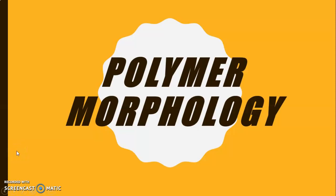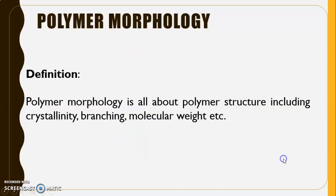We will proceed our lesson with Chapter 5, which is Polymer Morphology. Polymer morphology is all about polymer structure, including crystallinity, branching, and molecular weight together with the structure.